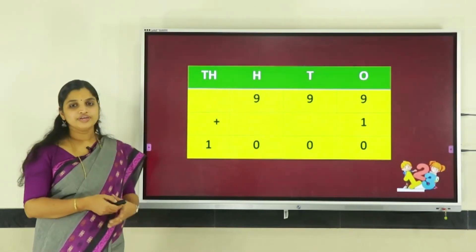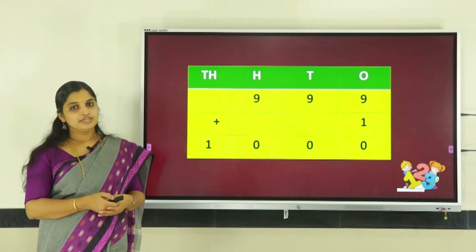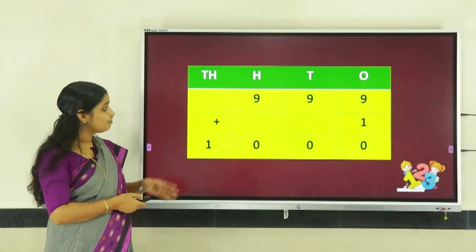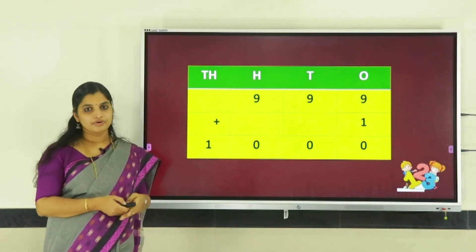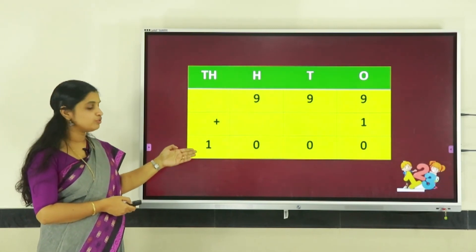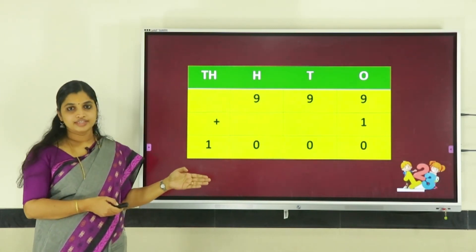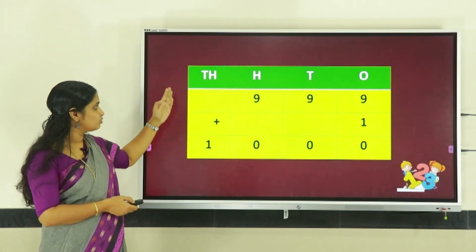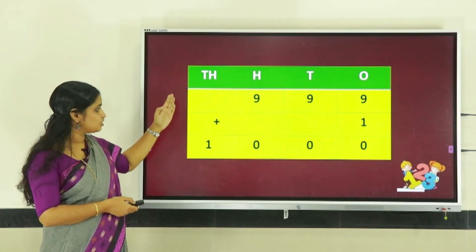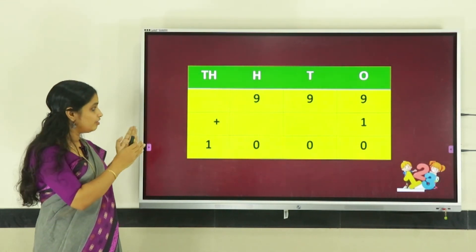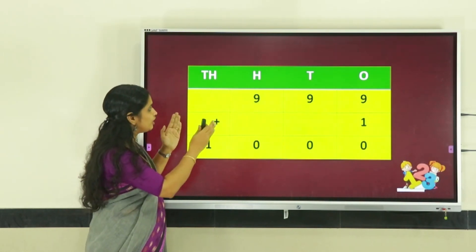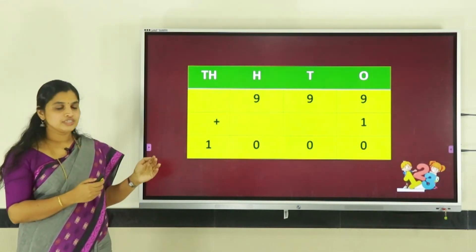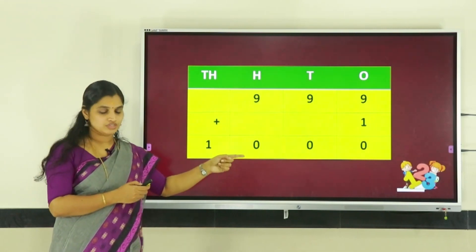Now how can we get the smallest four-digit number? When we add one to the greatest three-digit number, we get the smallest four-digit number, that is one thousand. Here, one is in the thousands place — so we are getting a new place in the place value chart, that is thousands. We read this number as one thousand.